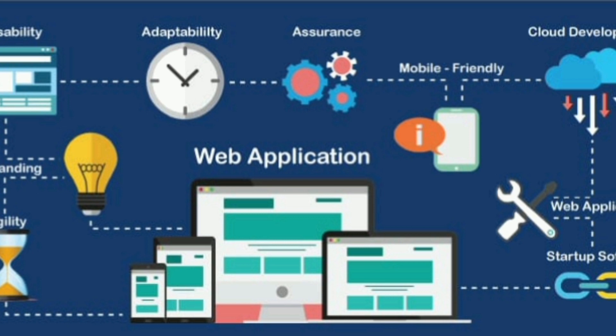The web application provides a complete product. Application software differs from utility software, operating systems software, and other types of software in that it is intended to be used on its own by an end user. The internet application software is a client-server application that uses standard internet protocols.